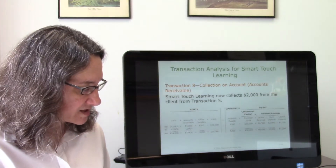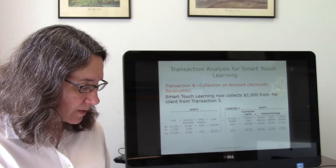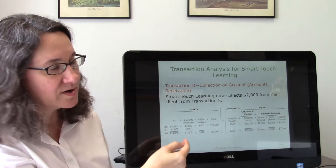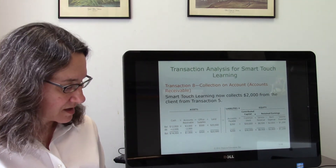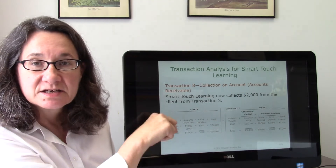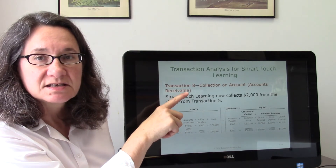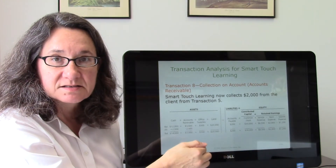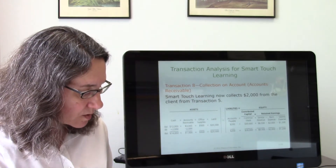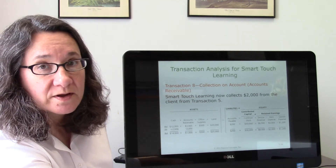In transaction eight, Smart Touch Learning collects $2,000 from clients who had previously owed accounts receivable. Collecting cash increases the asset cash. But we also need to decrease the asset accounts receivable, since that obligation has now been paid. Both the increase and the decrease are on the same (asset) side, so the equation still balances — we didn't need to change anything on the liabilities or equity side.